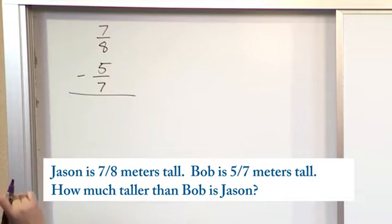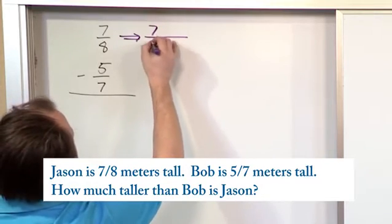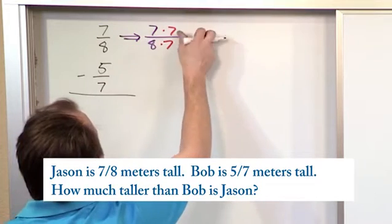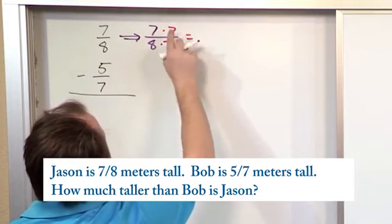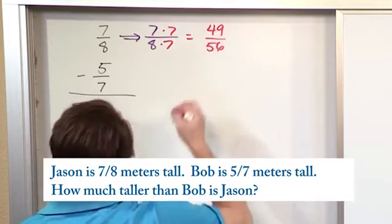8 times 7 is 56, so I know that I can use 56 as a common denominator. So I'll go 7 eighths, and then I can multiply this by 7 like this, and what I'll have is 7 times 7 is 49, and then 8 times 7, of course, is 56, right like that.